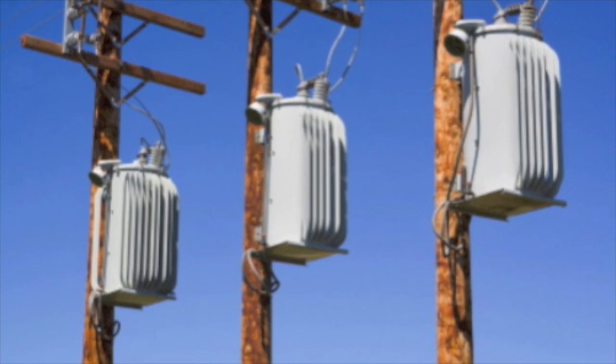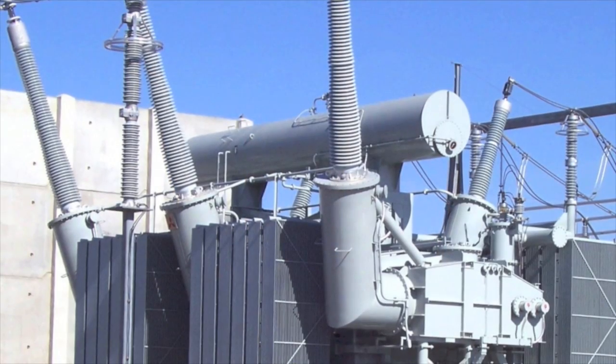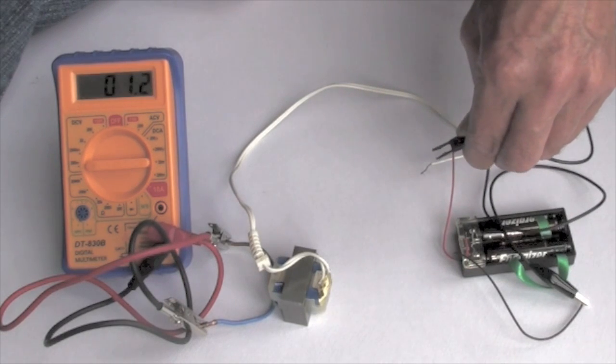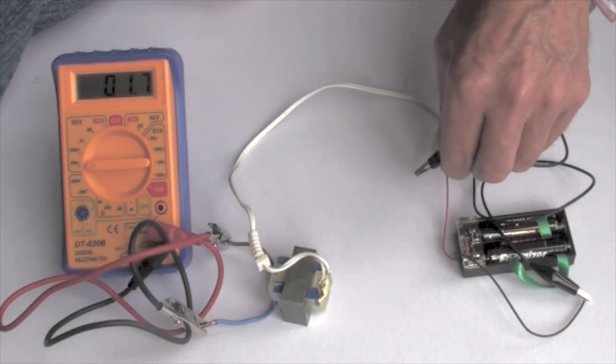When a transformer is used, the current through the primary coil is constantly being changed, usually by an AC supply, but here demonstrated with a simple dry battery.